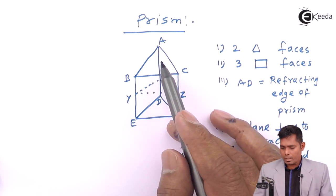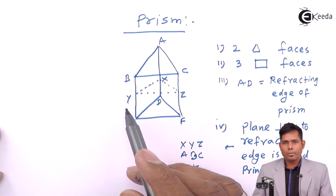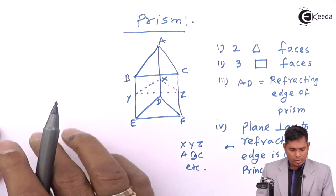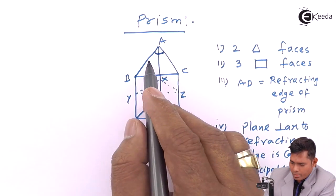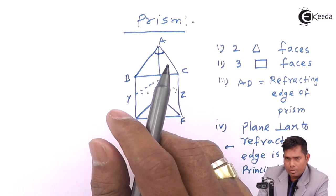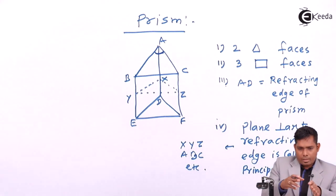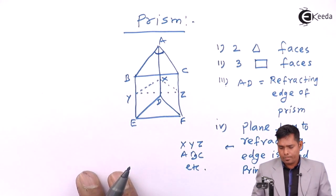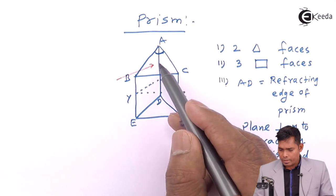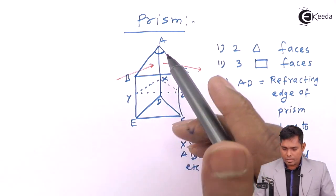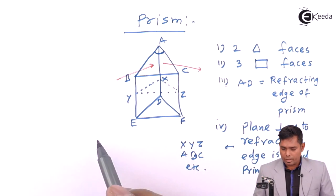The two sides — ADEB and ACFD — are the inclined planes, and they are called the refracting surfaces. The angle between the two refracting surfaces is called the angle of the prism, or prism angle. If light passes from one refracting surface and comes out of the other, the angle formed between those two inclined planes is called the prism angle.